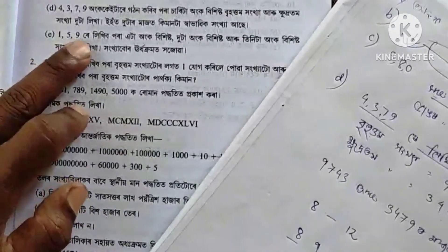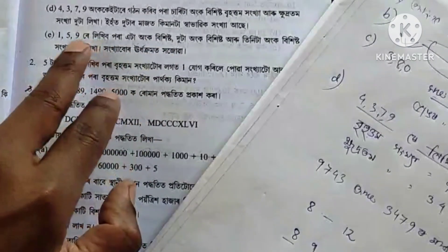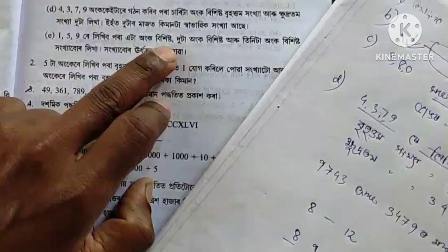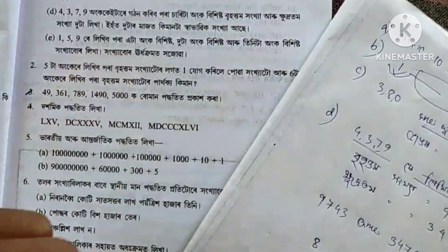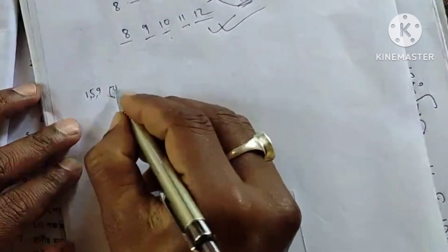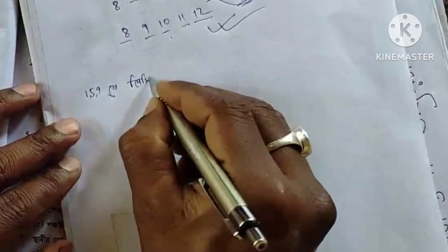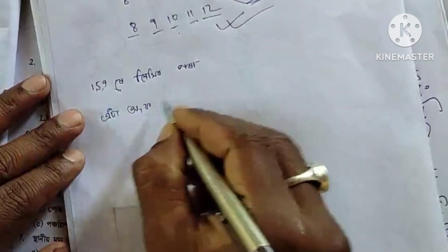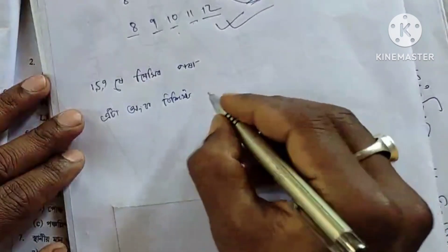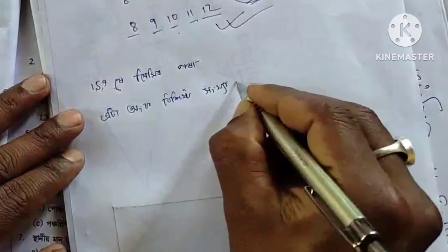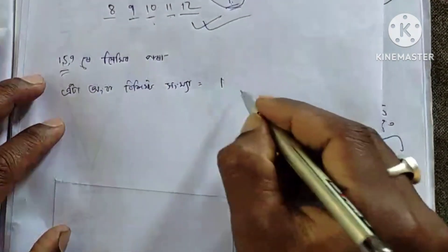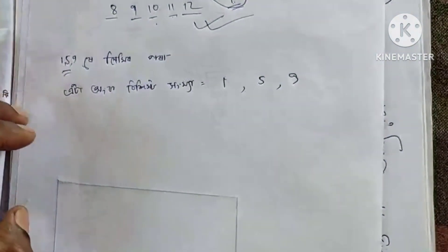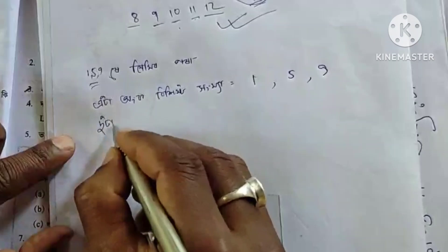Ek pas nore lixibo pora — eta onko bichisto. Tuta onko bichisto. Arotinita onko bichisto. Juenka bol dikha. Ek pas nore lixibo pora — eta onko bichisto. Juenka bol dikha, eta onko bichisto. Taa bichisto, dutta onko bichisto.